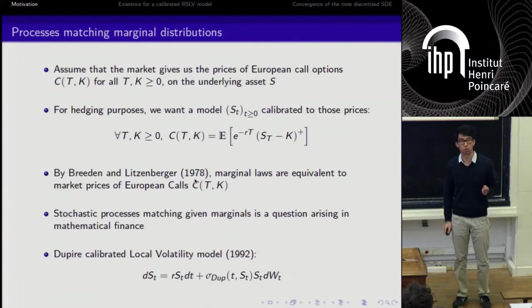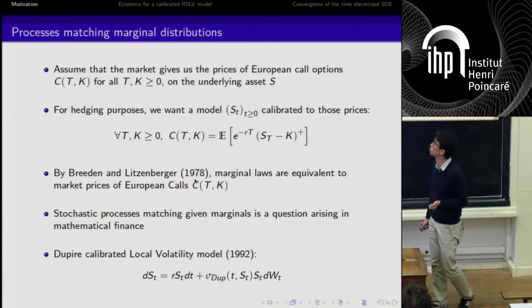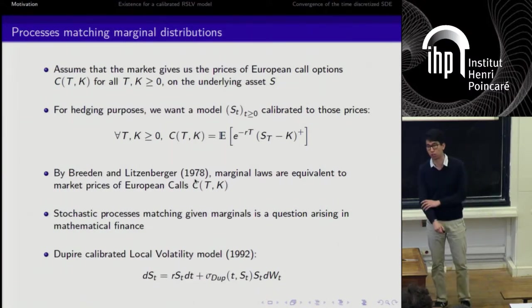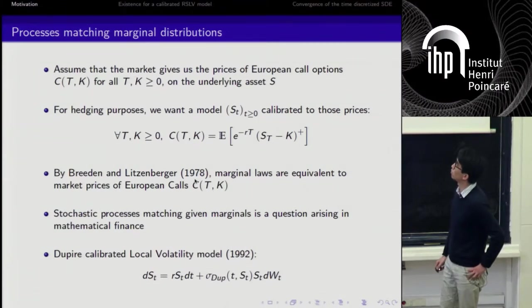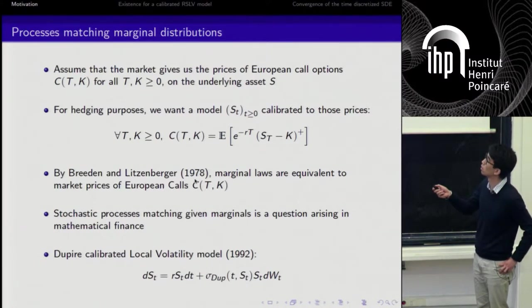First of all, this is not true in reality, but we assume that the market gives us the prices of call options for all maturity T and strikes K for a certain underlying asset S. For instance, the price of the asset on Facebook or any other S&P firm's value. In practice we only have those prices for a finite amount of T and K. If I buy a call today with characteristics T and K at time T, it will give me the payoff S_T minus K positive part.